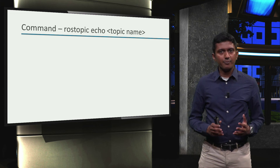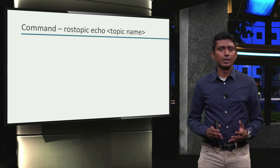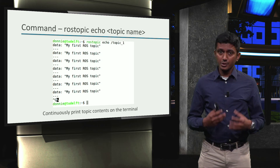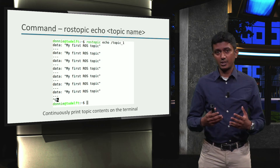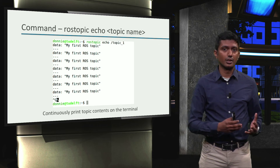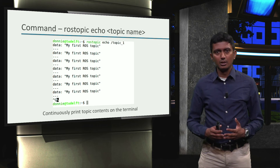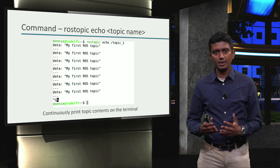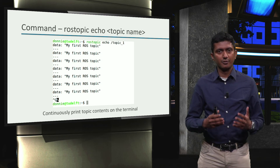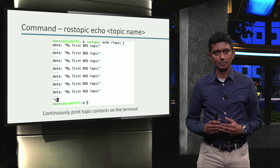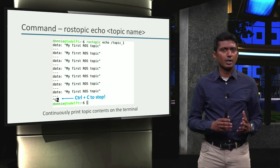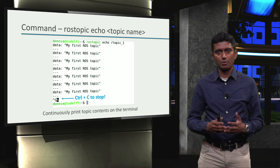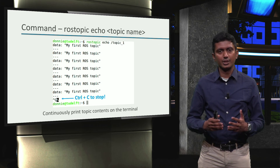The last command, `rostopic echo <topic_name>`, continuously prints the contents of the specified topic onto the terminal screen. In this example, the contents of topic_one is a string which has the content 'my first ROS topic'. It is relevant to note that the printing continues indefinitely until this command is stopped by pressing Ctrl+C.